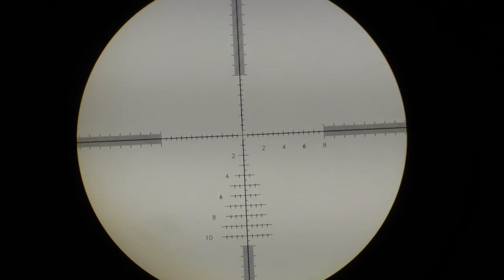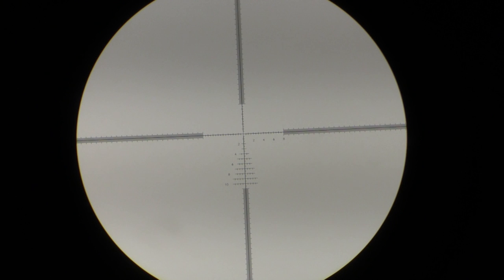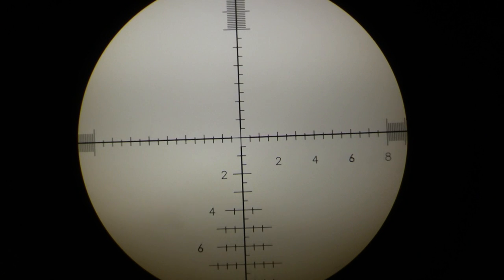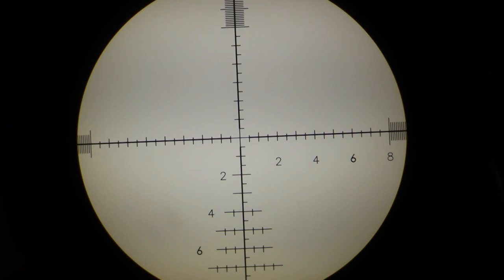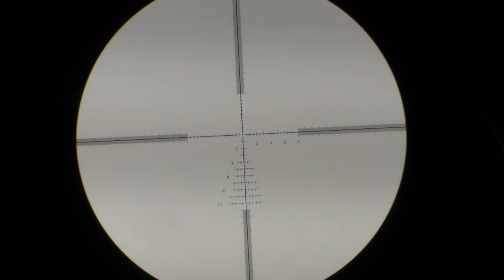A reticle in the first focal plane is placed at the front of the erector assembly and remains in the same visual proportion to the target across the rifle scope's entire magnification range. While the proportions of the reticle will appear to change, such as in the video that you're seeing now, when adjusting the magnification, in reality the reticle's values are remaining in proportion to the target.